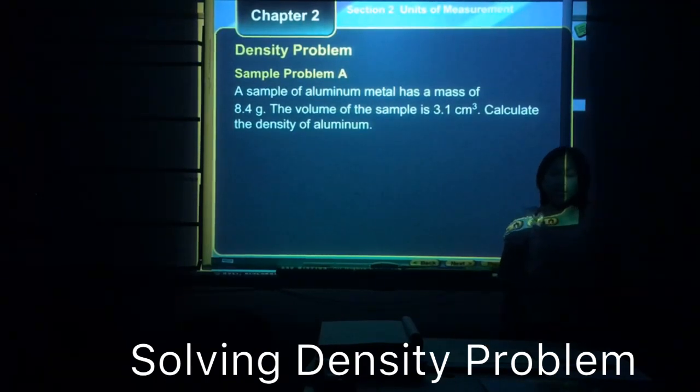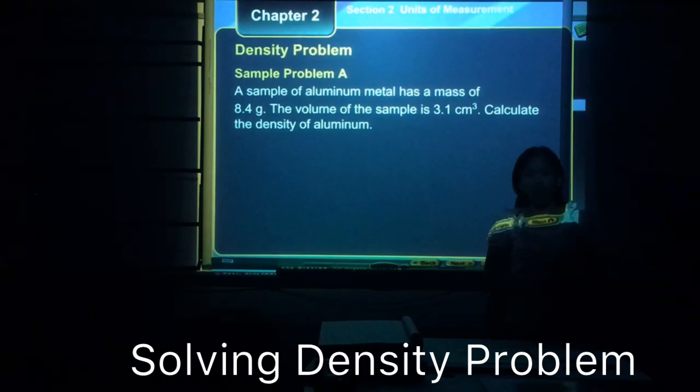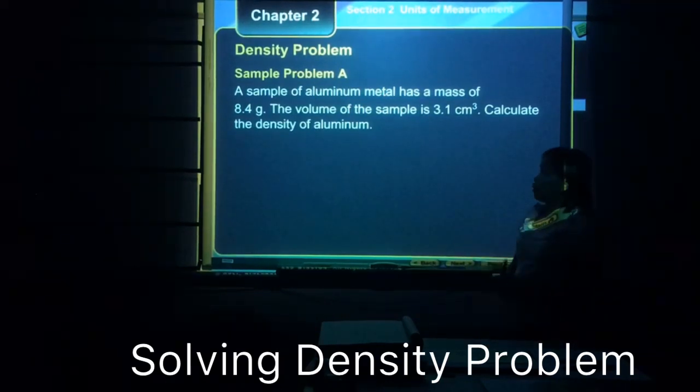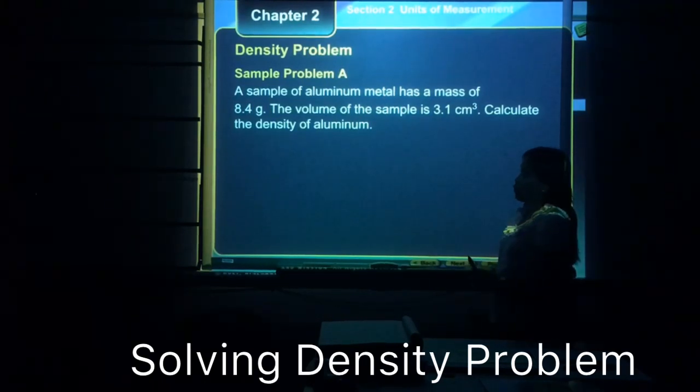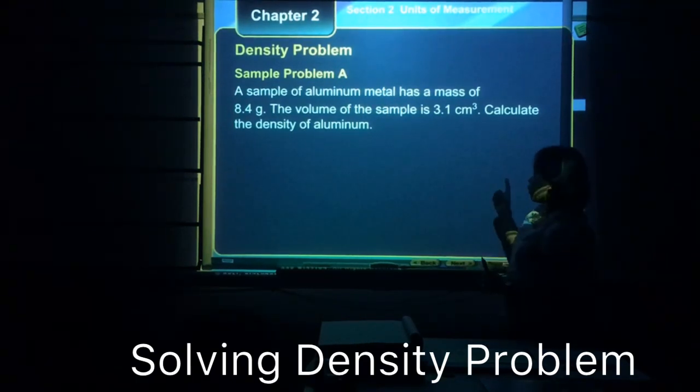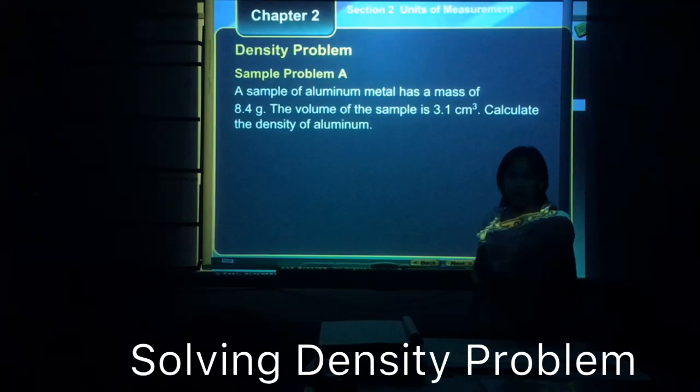We know that density is the ratio of mass and volume and here on the board is a sample problem of density. It says that a sample of aluminum metal has a mass of 8.4 grams and the volume of the sample is 3.1 cubic centimeters. Calculate the density of this particular metal, aluminum.